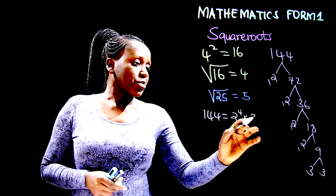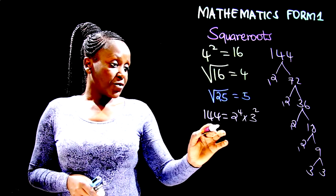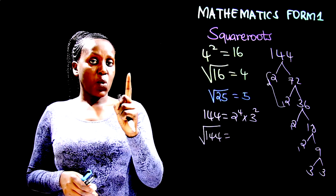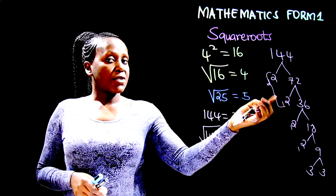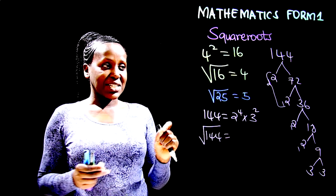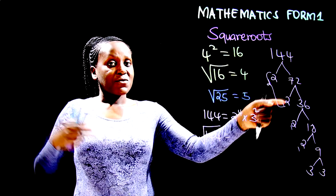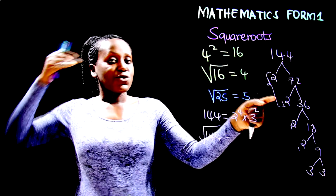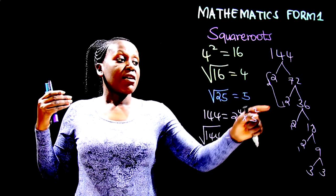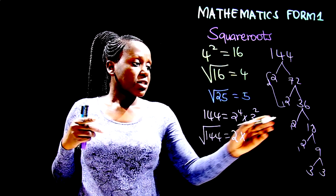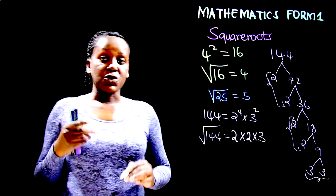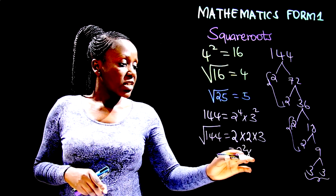When obtaining the square root of 144, for every two similar numbers we take one, because two times two is two squared and the square root of two squared is two. Two times two gives you four, which is the square, and the square root of four is two because you multiply two by two to get four. So for every two similar numbers, one of them forms the square root. Here we have 2 to the power 2 times 3 to the power 1.